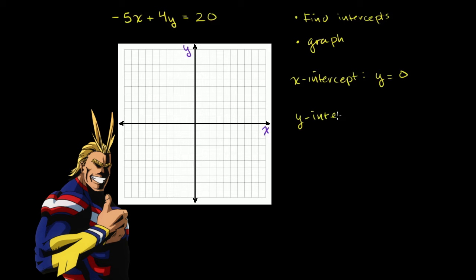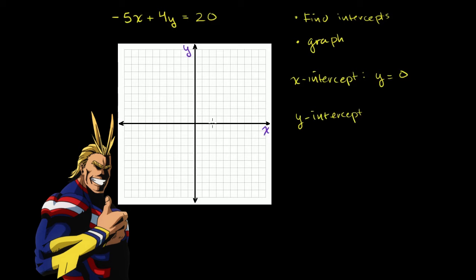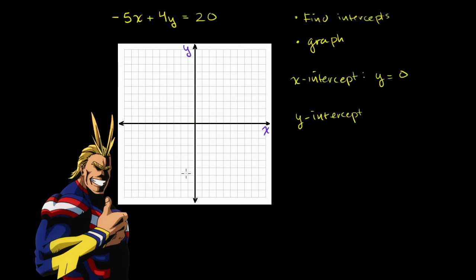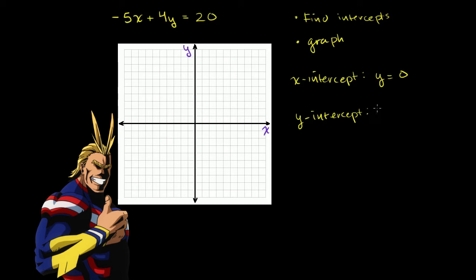And by that same argument, what's the y-intercept? Well, if I'm somewhere along the y-axis, what's my x value? I'm not to the right or the left, so my x value has to be 0. So the y-intercept occurs when x is equal to 0.